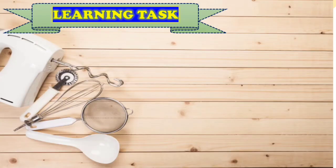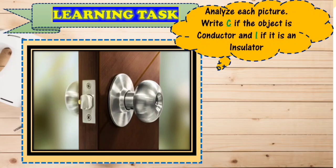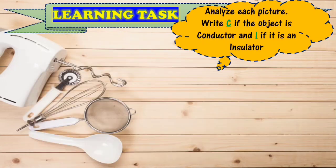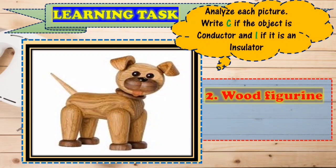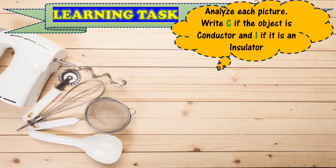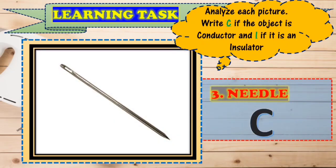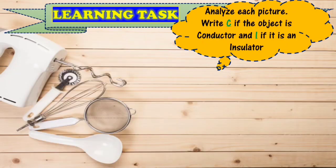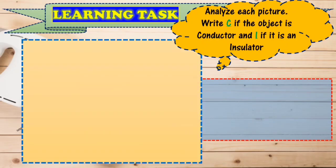Okay, let's do this learning task. Analyze each picture. Write C if the object is a conductor and I if it is an insulator. The first picture is a doorknob — that is C, conductor. Number two: wooden figurine — that is I, insulator. Number three: needle — that is C, conductor. Number four: nails — that is C, conductor. And the last picture is rugs — that is I, insulator.